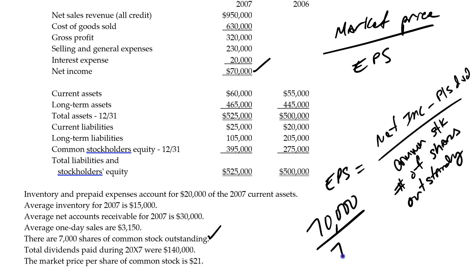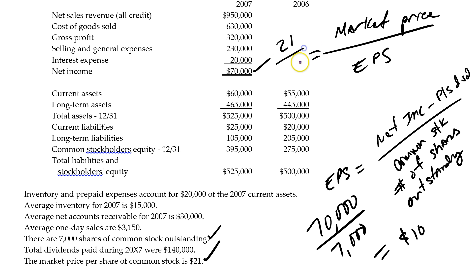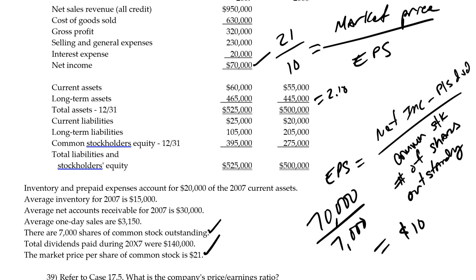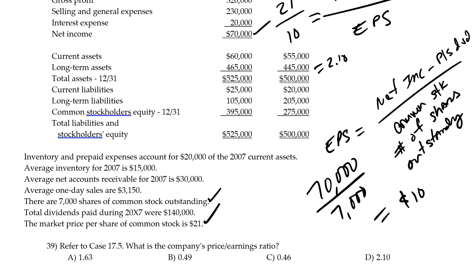Seventy thousand of net income divided by seven thousand shares outstanding gives us earnings per share of ten dollars. The market price of the stock is $21, so it's 21 divided by 10, which is 2.1. This is a very low PE ratio — this stock is trading very low. If this were a company you thought could go somewhere, this would be a very low risk investment.